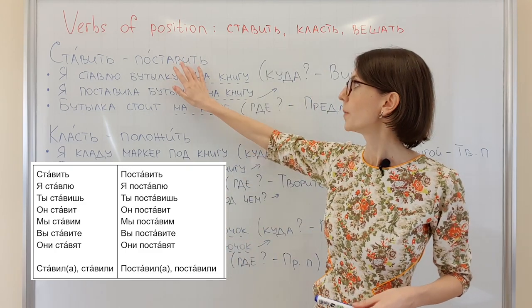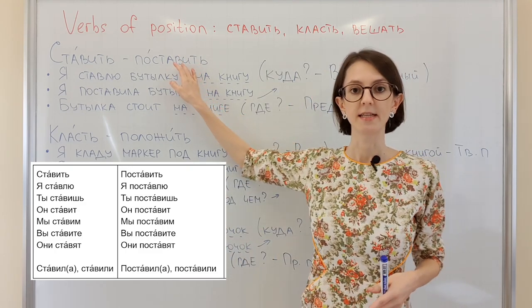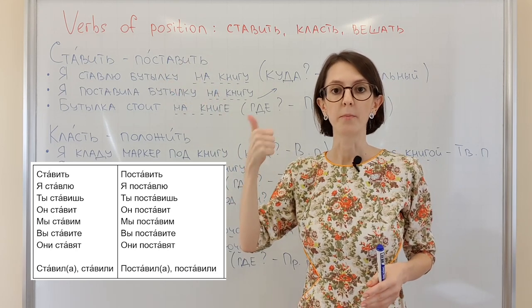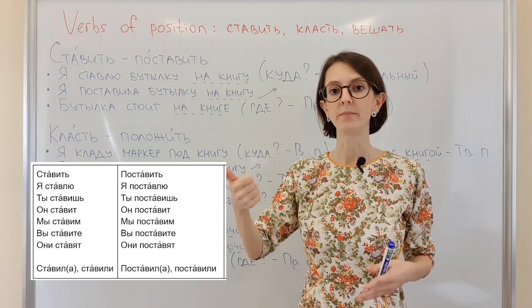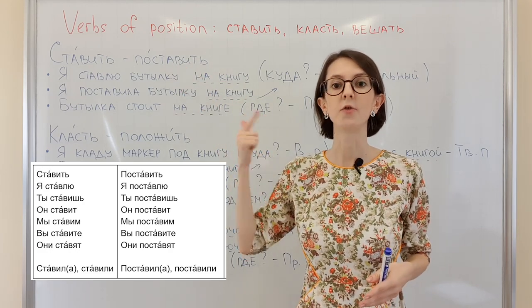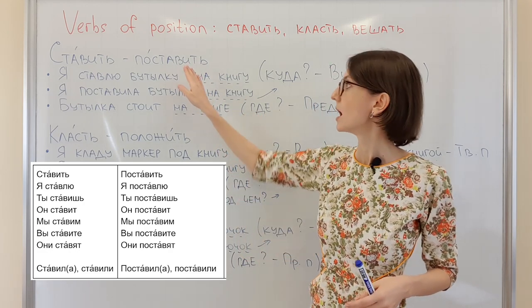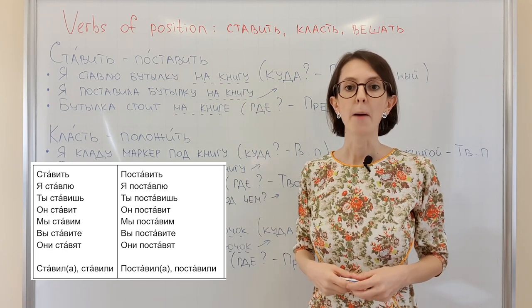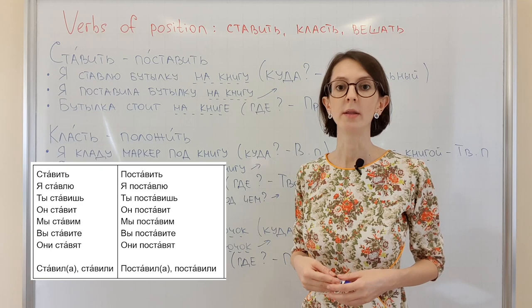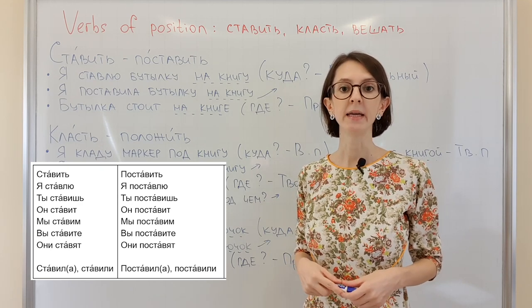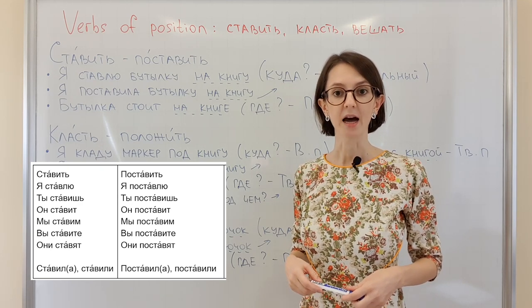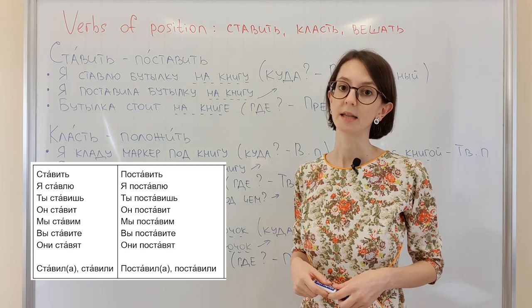The verb поставить is SV — it has only past and future forms. Я поставлю, ты поставишь, он поставит, мы поставим, вы поставите, они поставят.